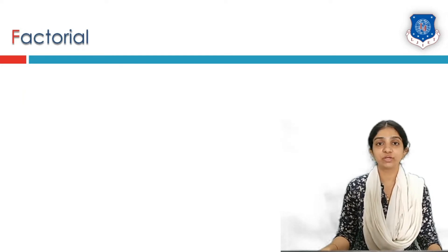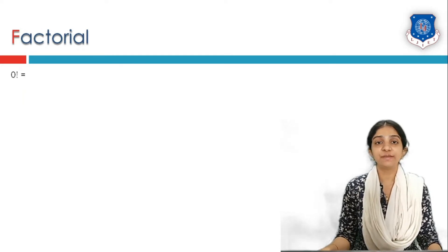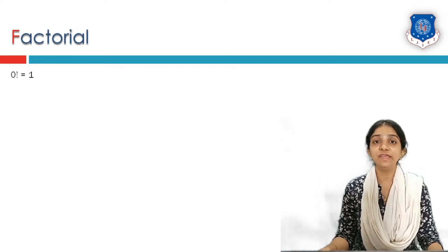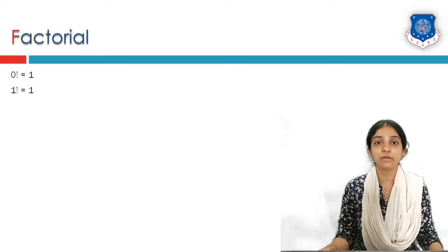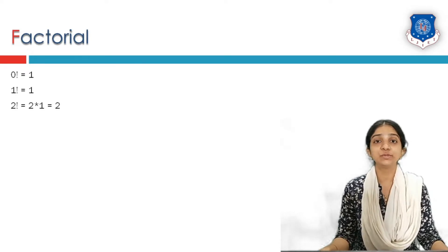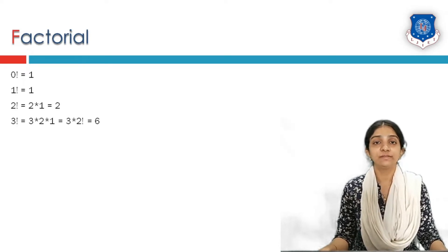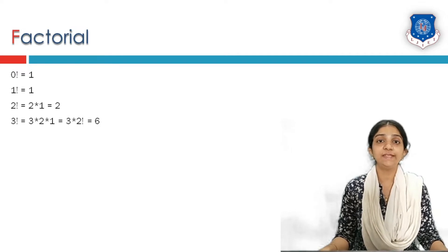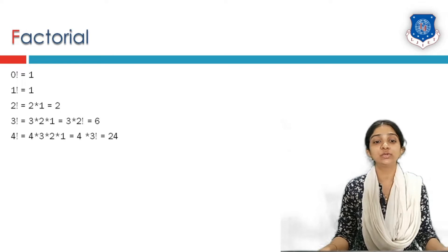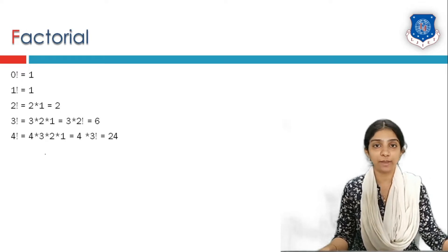Starting with factorial: the factorial of a number or any integer is given as 0 factorial is 1, 1 factorial is also 1, 2 factorial is 2 into 1, 3 factorial is 3 into 2 into 1, and 4 factorial is 4 into 3 into 2 into 1.